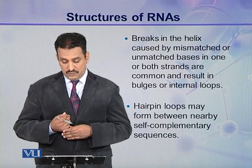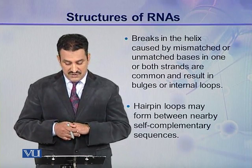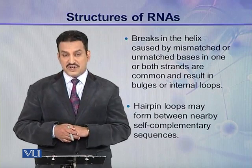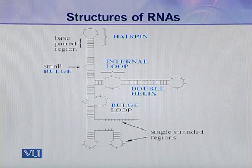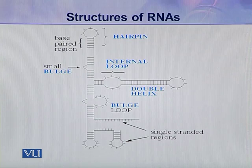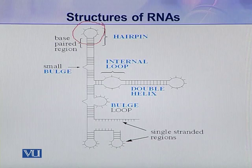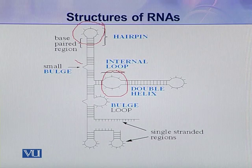Another type of loop is the hairpin loop, which may form between nearby self-complementary sequences. This can be seen in the illustration, which shows a number of secondary structures assumed by ribonucleic acids. For example, here you can see a hairpin loop, and this is an internal loop. And this is a small bulge where only one or two bases are not complementary to each other.